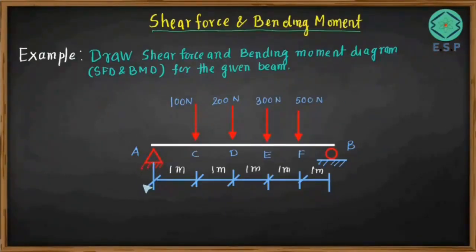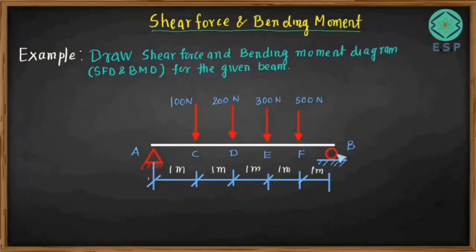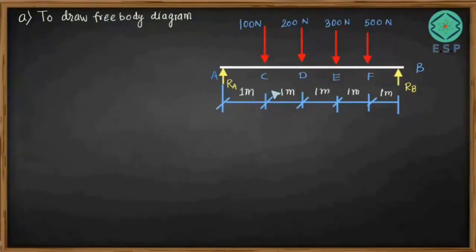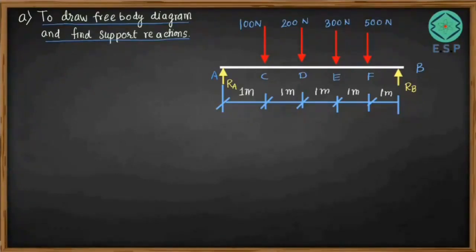At point A, we have a hinge support and there is no inclined load acting on the beam. So in that situation, it will have one single vertical support reaction at point A. Similarly, at point B, since it is a roller support, there will be a single vertical support reaction acting at point B. We have drawn the free body diagram and we have to find the support reaction for this particular beam.